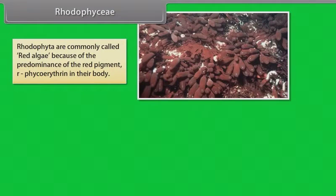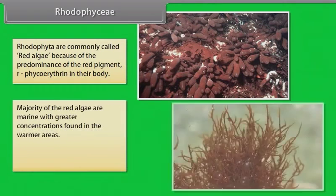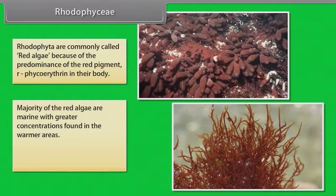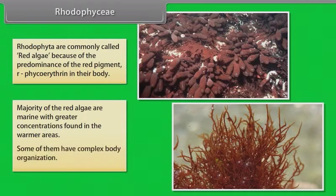Rhodophyta. Rhodophyta are commonly called red algae because of the predominance of red pigment, R-phycoerythrin, in their body. Majority of red algae are marine with greater concentrations found in the warmer areas. Some of them have complex body organization.